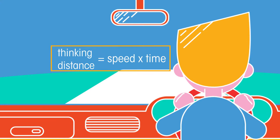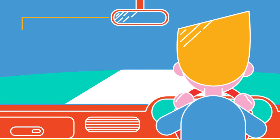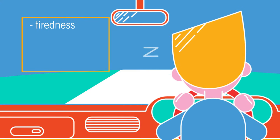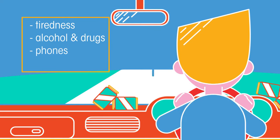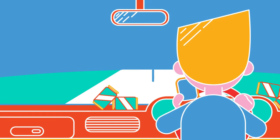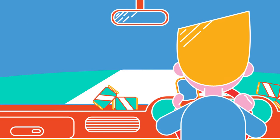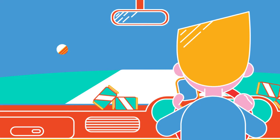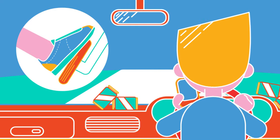There are lots of factors which affect thinking distance. For example, tiredness, being intoxicated, and distractions such as using your phone or playing loud music. This is because they all slow down your reactions, meaning it takes longer for you to realize what is going on and then press the brake pedal.